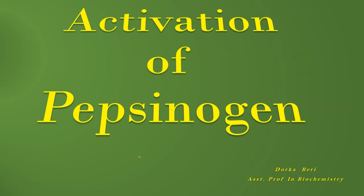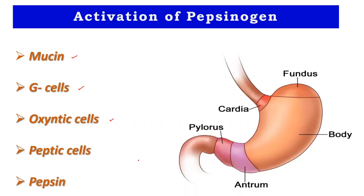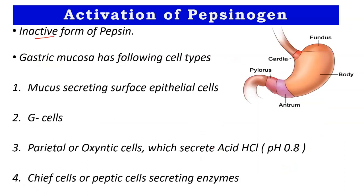As you know, pepsin is a very important gastric juice. Before we go into detail, we have to learn about these terms: mucin, G cells, oxyntic cells, peptic cells, as well as pepsin. These are the regions in the stomach which we will see later.